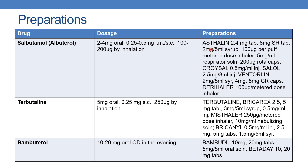Coming to the preparations: Astalin 2 and 4 mg tablet, 8 mg sustained release tablet, 2 mg per 5 ml syrup, 100 mcg per puff metered dose inhaler, 5 mg per ml respirator solution, and 200 mcg rotacaps. Cryosol is available as 0.5 mg per ml injection. Salol is available as 0.25 mg per 3 ml injection and Ventoril as 2 mg per 5 ml syrup and 4 mg and 8 mg continuous release capsules. Derihaler is available in 100 mcg per metered dose inhaler.